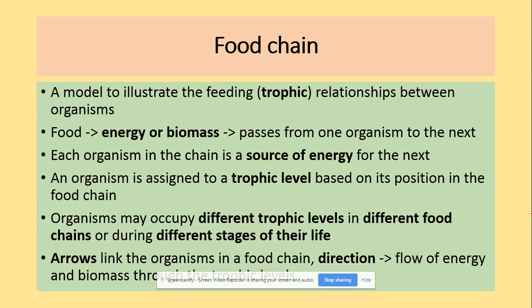A food chain is a model to illustrate the feeding and trophic relationships between organisms. Glucose, energy, or biomass is passed from one organism to the next, and each organism in the chain is the source of energy for the next one. An organism is assigned to a trophic level based on its position in the food chain, and it might occupy different trophic levels in different food chains or during different stages of its life. The arrows link organisms in the food chain and represent the flow of energy and biomass throughout the trophic levels.